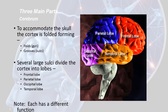On each side of the cerebrum, we have lobes that are connected to each other by function, and all the nerve bundles in there are all connected, so that's how we know these parts work together. We have the frontal lobe, the parietal lobe, the occipital lobe, and the temporal lobe. Each one of these has a different function, and there's a part on each side.